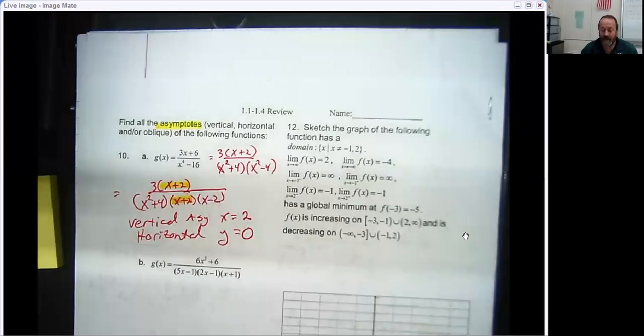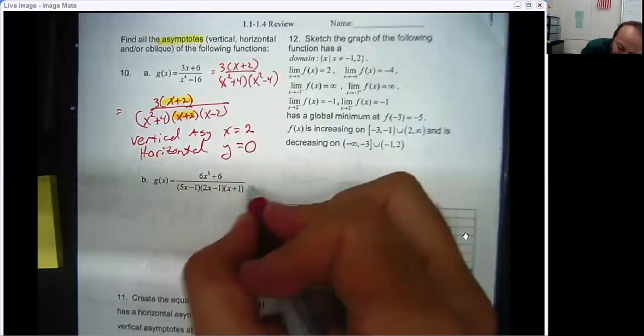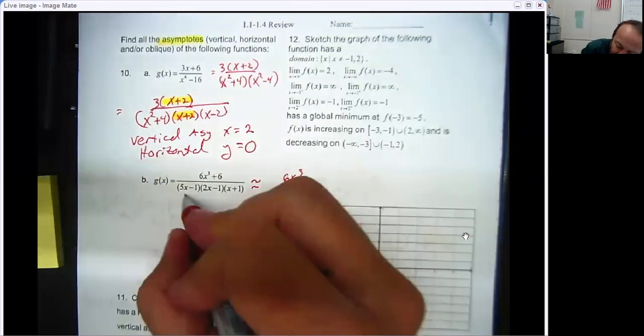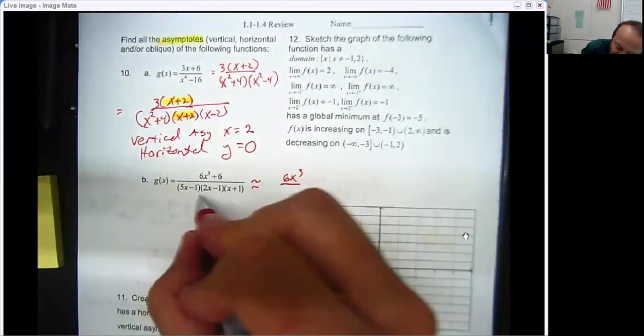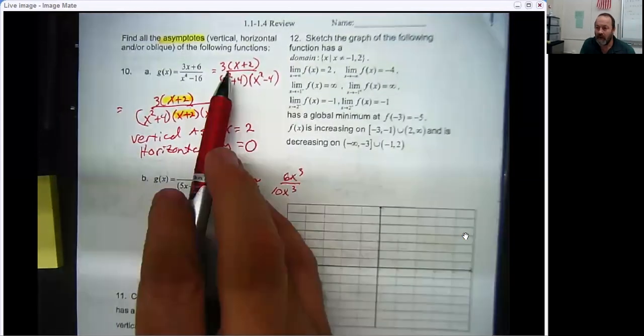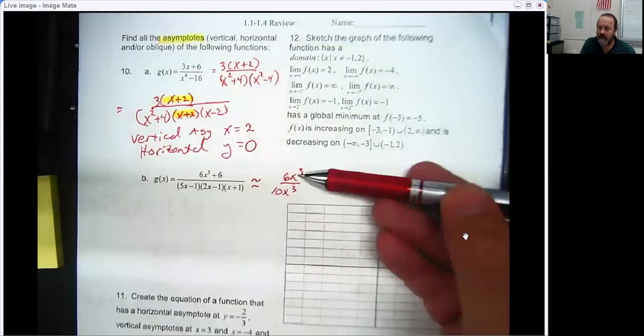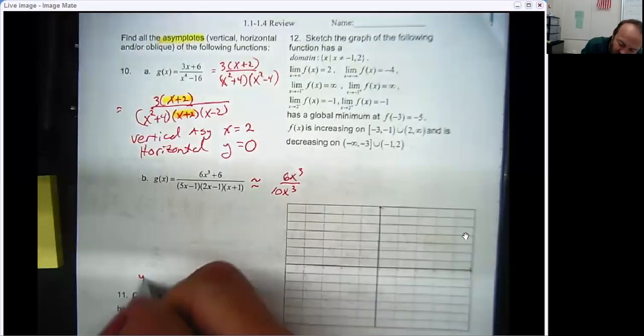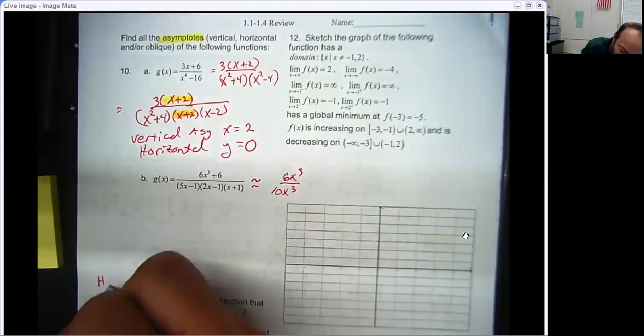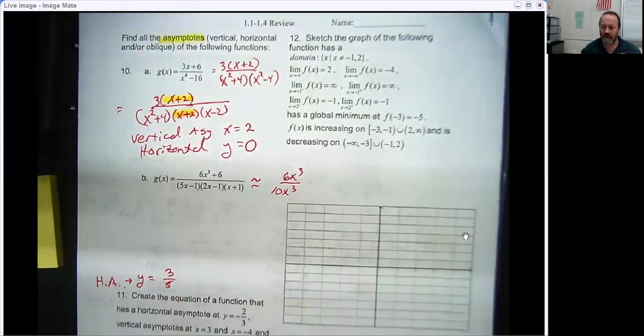Now, something a little different happens in part B. Now, in part B, we can see in a sense that we have something like a 6x cubed, and we have something like a 10x cubed in the bottom. Notice, whereas this one had the numerator had a smaller degree than the denominator, in this case, they're the same. So that makes a horizontal asymptote at 0.6 or 3 fifths. There is a horizontal asymptote there because it's just a ratio of those coefficients.